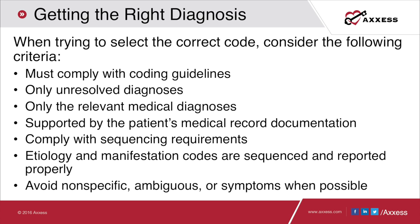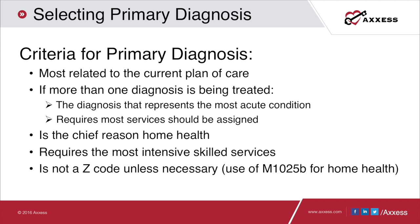When selecting the right code, you also need to make sure you comply with sequencing requirements, that your etiology and manifestation codes are sequenced and reported properly, and that we avoid nonspecific, ambiguous, or symptom codes when possible. The primary diagnosis that goes in M1021 should be most related to the current plan of care. If there is more than one diagnosis being treated, the diagnosis representing the most acute condition requiring the most services should be assigned as primary. We also know we shouldn't use a Z code unless it's absolutely necessary.